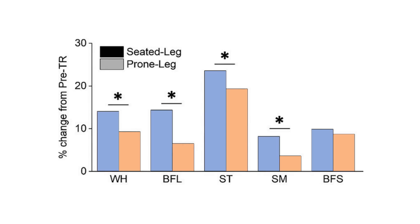This was except for the short head of the biceps femoris, which saw similar growth in both legs, likely because its length isn't influenced by either the lying or seated leg curl.